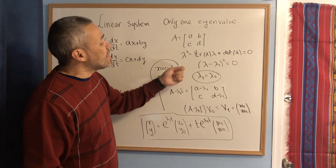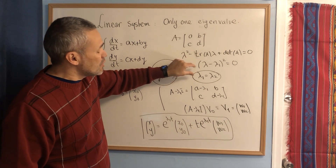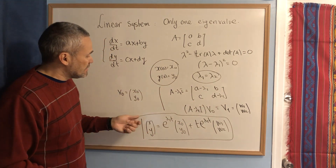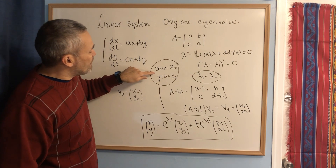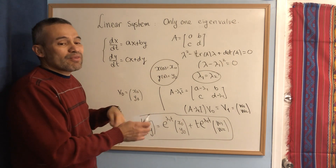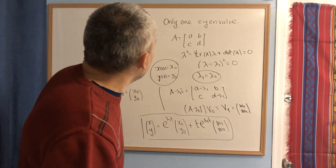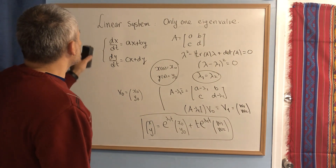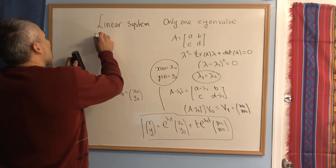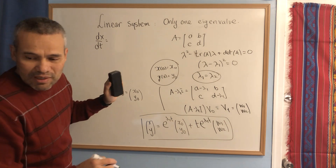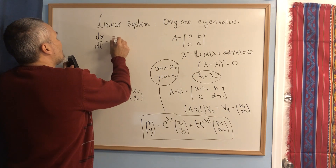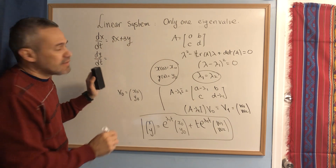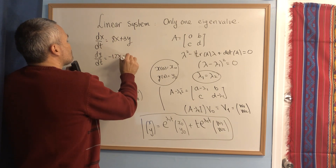One key difference is that you didn't have to compute an eigenvector or solve a system of equations — you just multiplied a matrix by a vector. Another big difference is that to solve the initial value problem, you didn't have to go through finding c₁ and c₂. Now let's do a particular example. Suppose we have dx/dt = 8x + 3y and dy/dt = -12x - 4y.